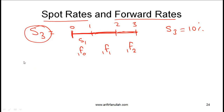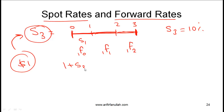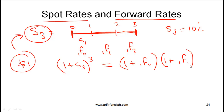The link between S3 and these three forward rates is as follows. If you invest $1 at the spot rate, or if you invest $1 rolling through each forward rate sequentially, you should end up with the same amount at the end of year three. So: (1 + S3)^3 = (1 + 1F0) × (1 + 1F1) × (1 + 1F2).